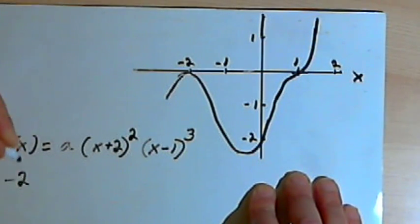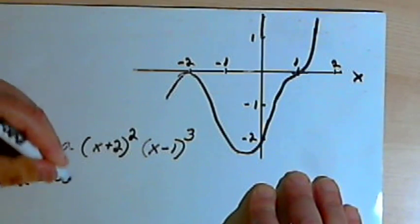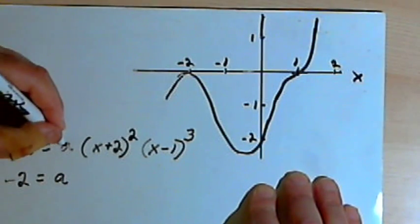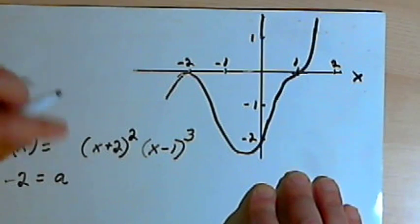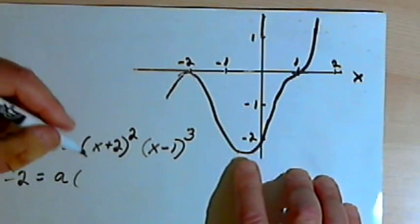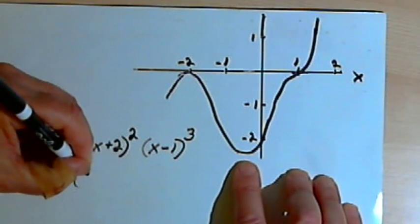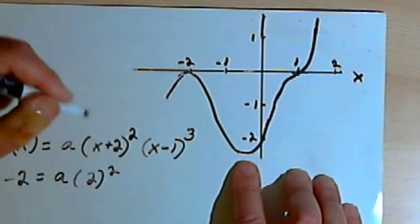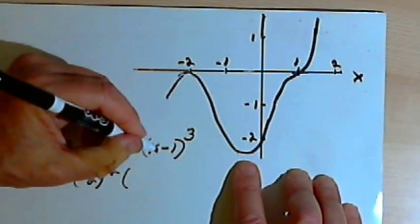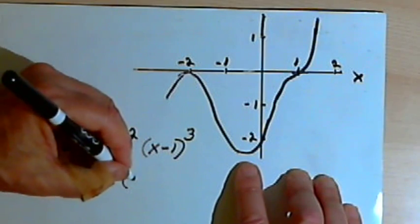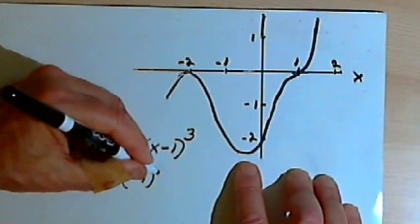I'll put in negative 2 equals a... Let me fix this a over here... a times... let's see, x was 0. 0 plus 2 is 2. So that's going to be 2 squared. And then I've got x minus 1, so that's 0 minus 1, or just negative 1, to the third power.